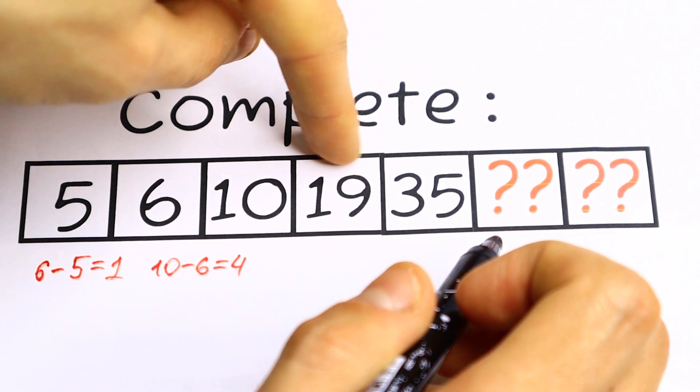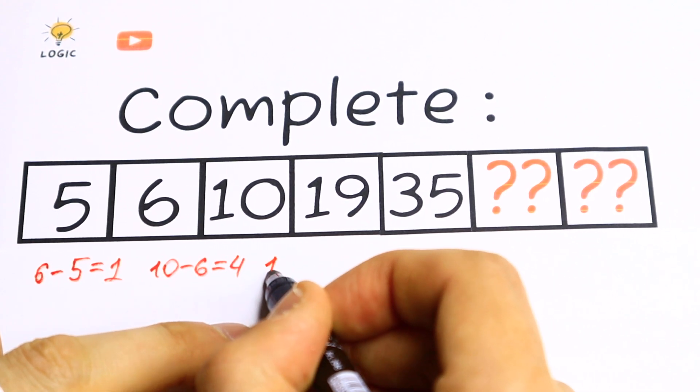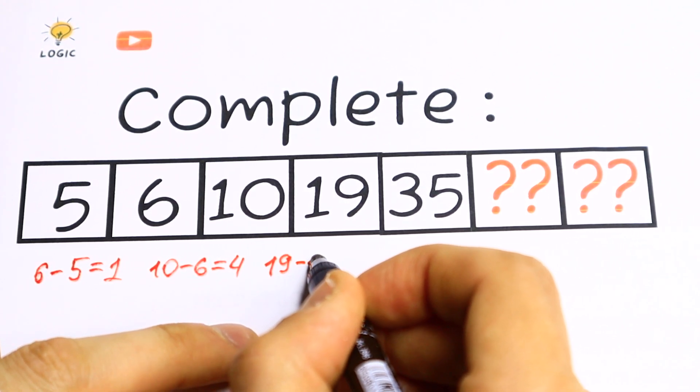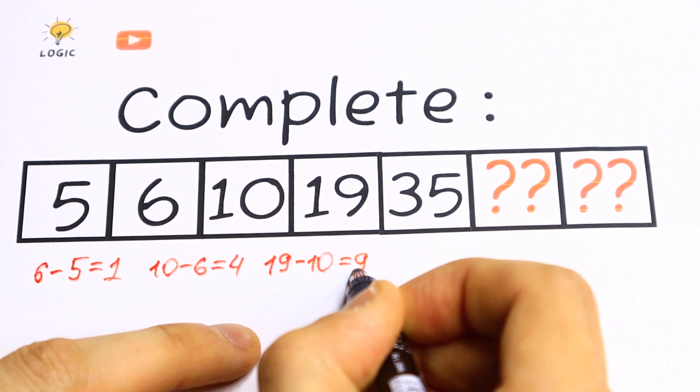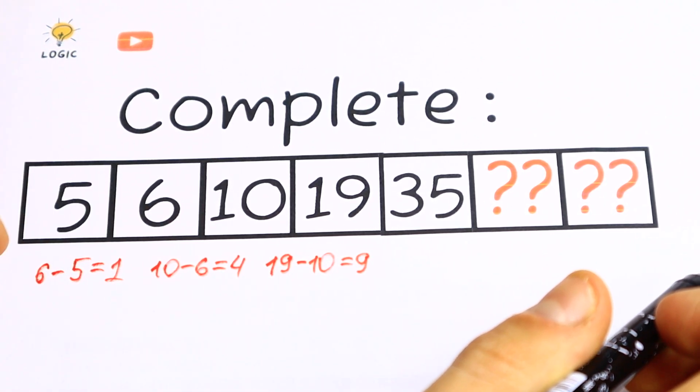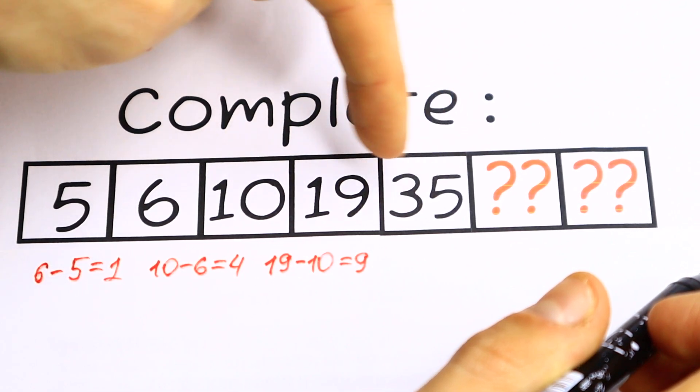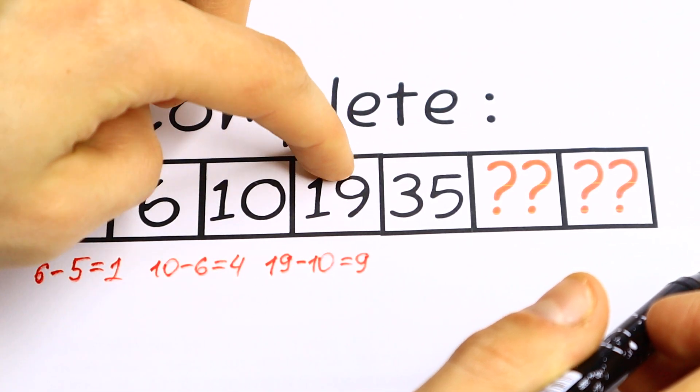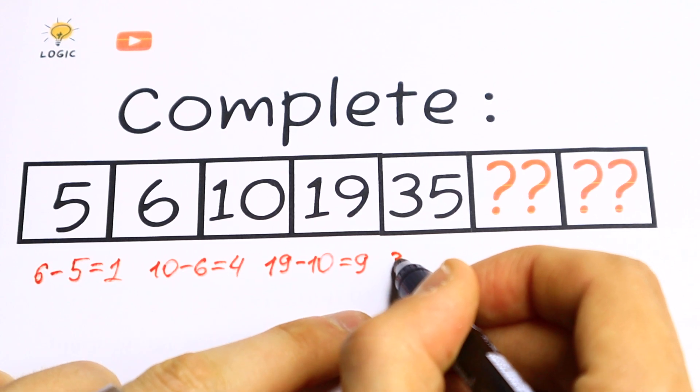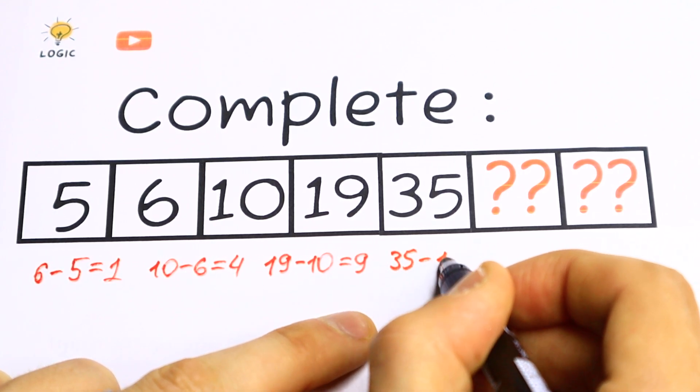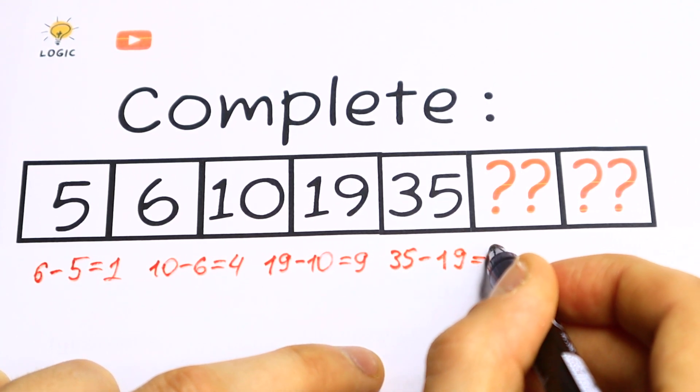And let's subtract the fourth element from the third one. What we will have? 19 minus 10. We will have 9. And let's use the same logic once more. Let's subtract from the next one the previous one. What we will have? 35 subtract from 19. We will have 35 minus 19. We will have 16.